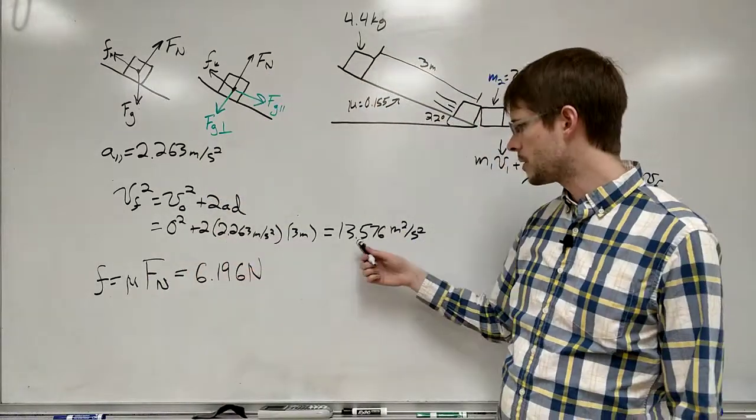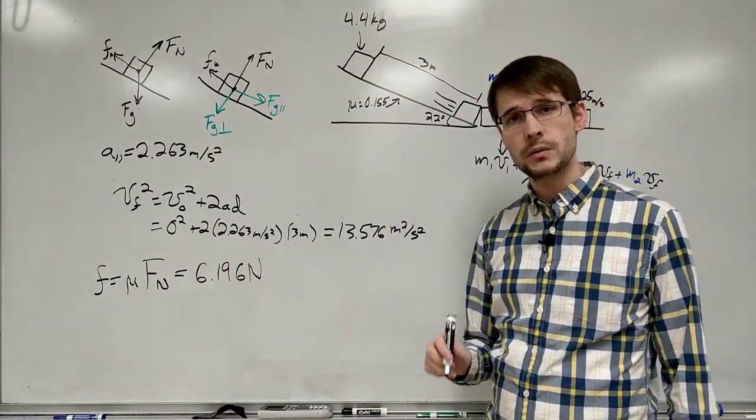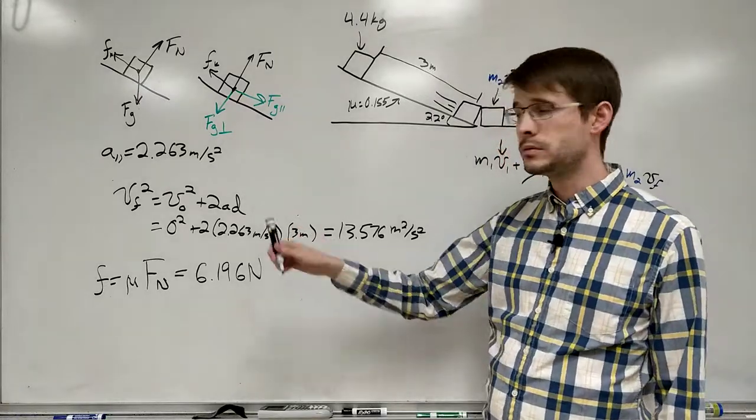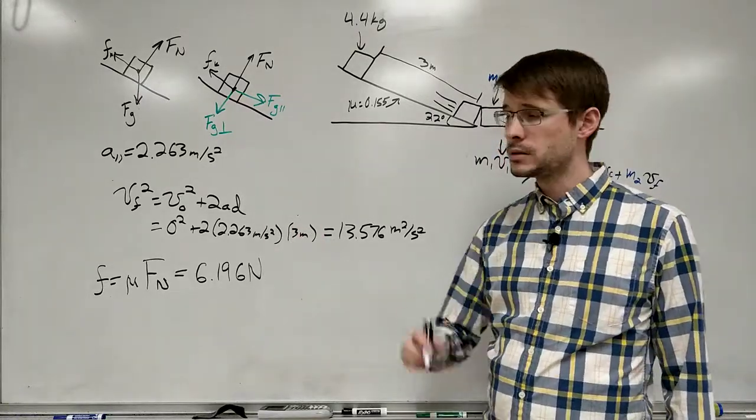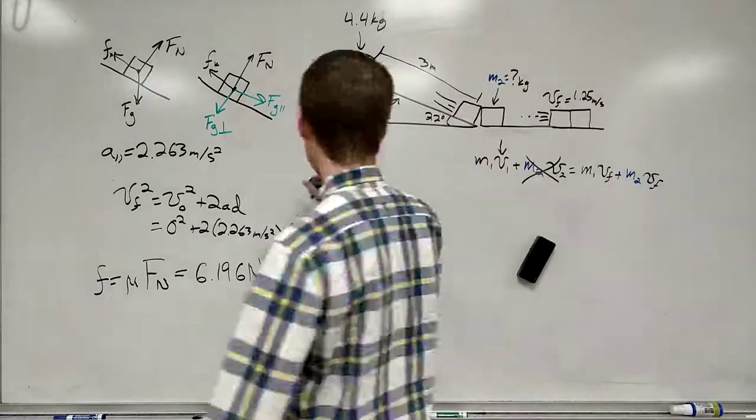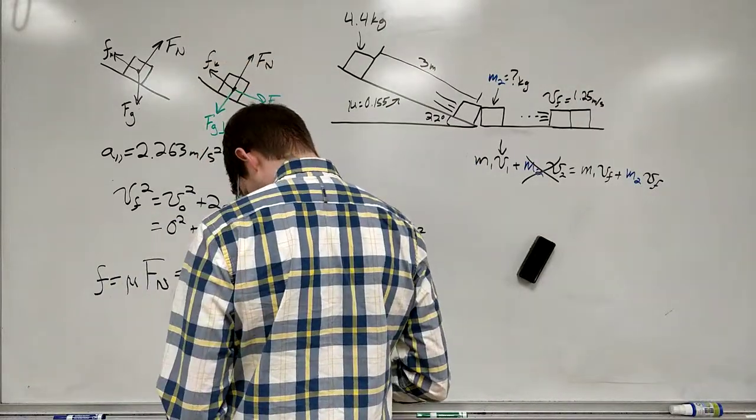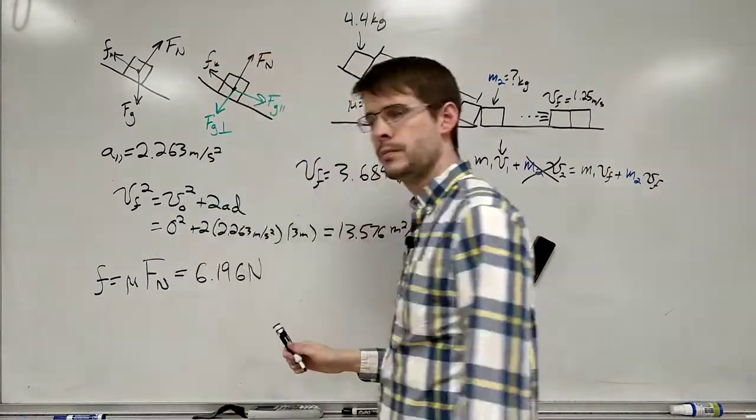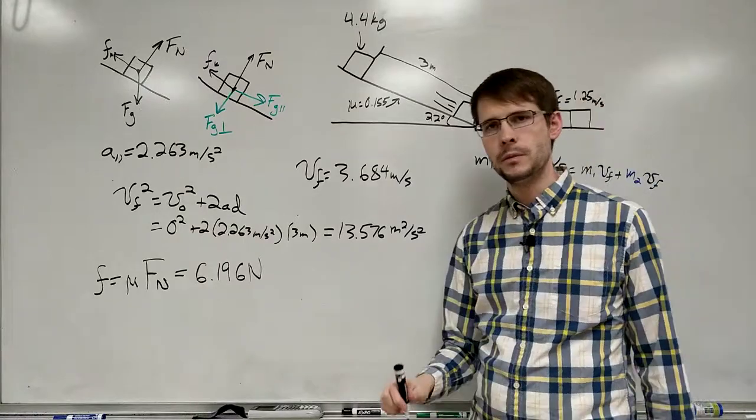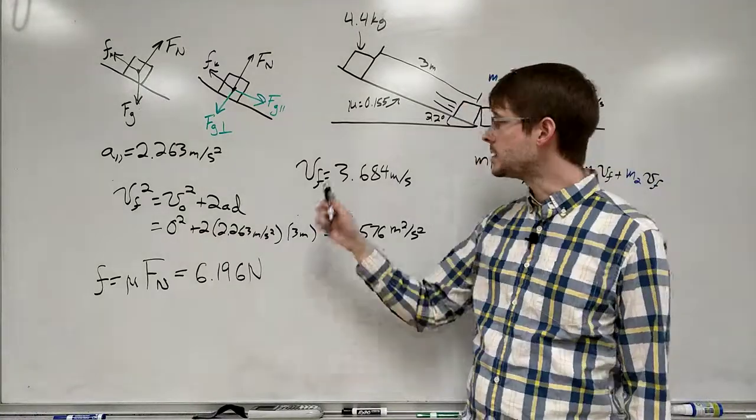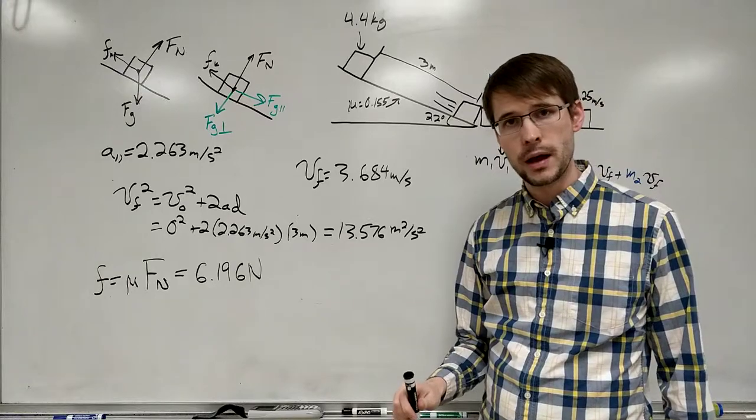So if we plug everything in, we get 13.576 meters squared per second squared is equal to the final velocity squared. So we take the square root of both sides. We get 3.684 meters per second. That's the speed it is when it hits the other block.